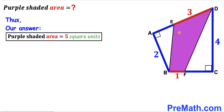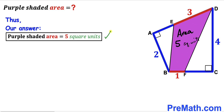So the area of this purple shaded quadrilateral is 5 square units — and that's our final answer. Thanks for watching, and please don't forget to subscribe to my channel for more exciting videos. Bye!